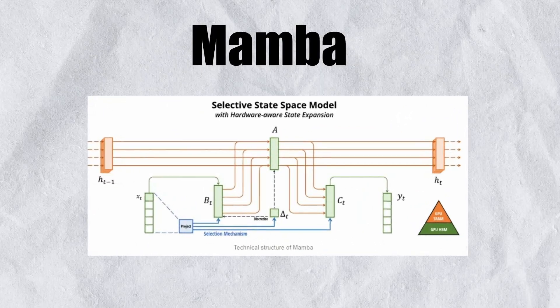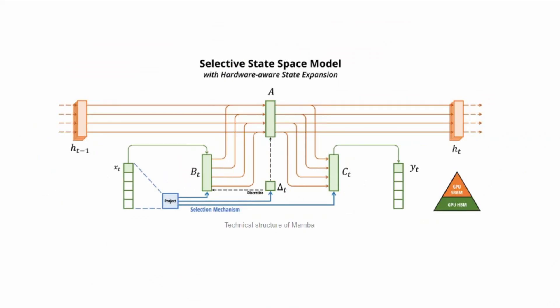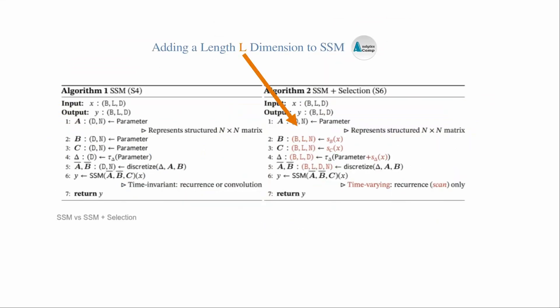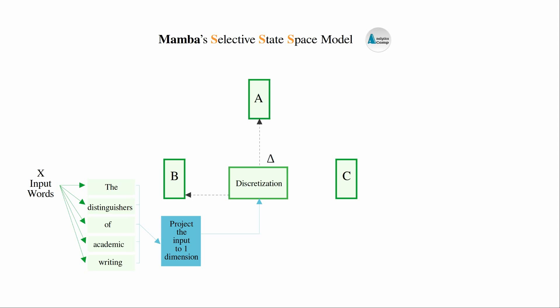Mamba, on the other hand, solves this issue for dynamic data by using this selective state space model where length dimension is added to the B and C parameters where the lengths of input and output data can vary. The model also projects the input words onto the B and C parameters.